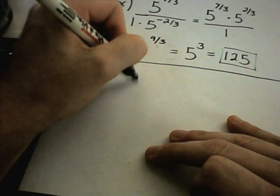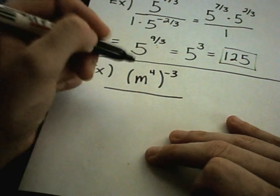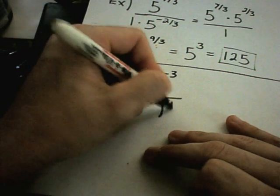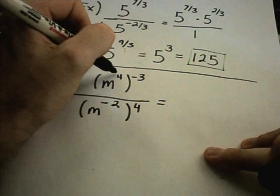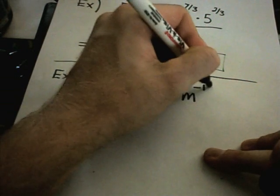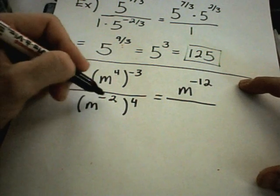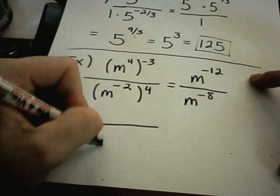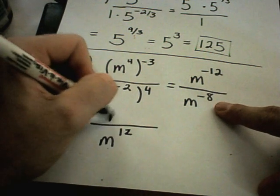Suppose I have m to the 4th raised to the negative 3rd, and that's being divided by m to the negative 2nd power, and all of that raised to the 4th power. Well, I'm going to get rid of the parentheses on top. Remember if they're in parentheses, you multiply. So, I'll get m to the negative 12th power, 4 times negative 3 being negative 12. On the bottom, I'm going to get m to the negative 8th power. And since the one on top is a negative exponent, I can put it in the denominator, making it positive. I can do the same thing with the negative exponent in the denominator. I can move it to the numerator.